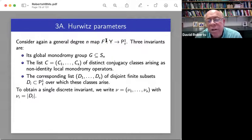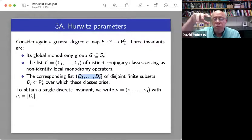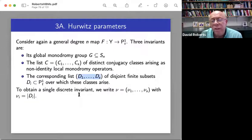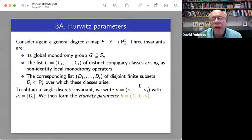So to obtain a single discrete invariant, we'll just take the degree of these divisors and call them mu. And so we then form what's called the Hurwitz parameter. So for those of you for whom all this is new, Hurwitz parameters are combinatorial data.